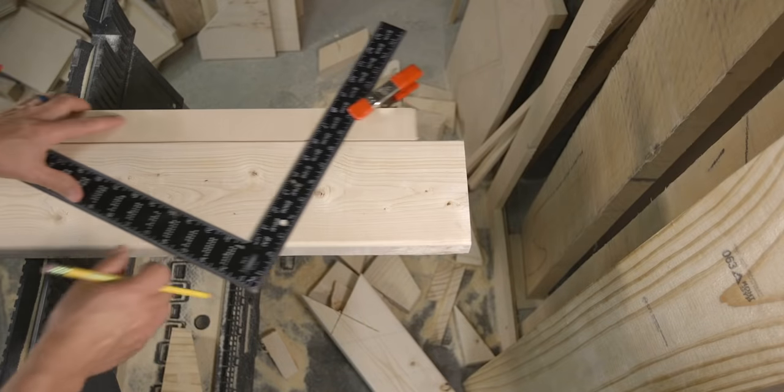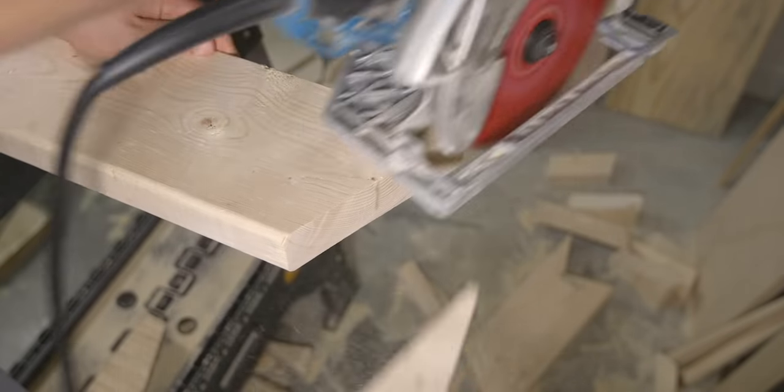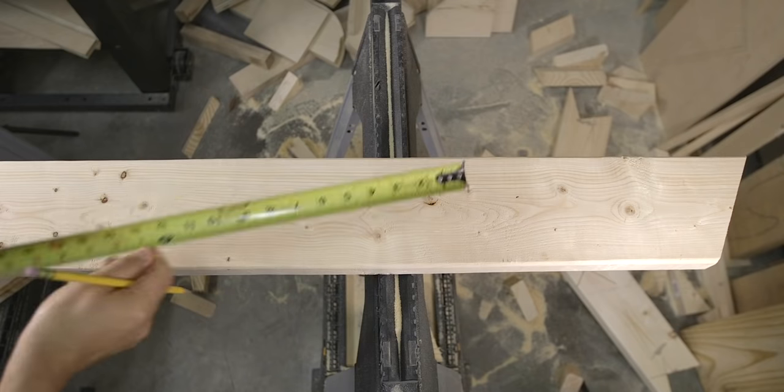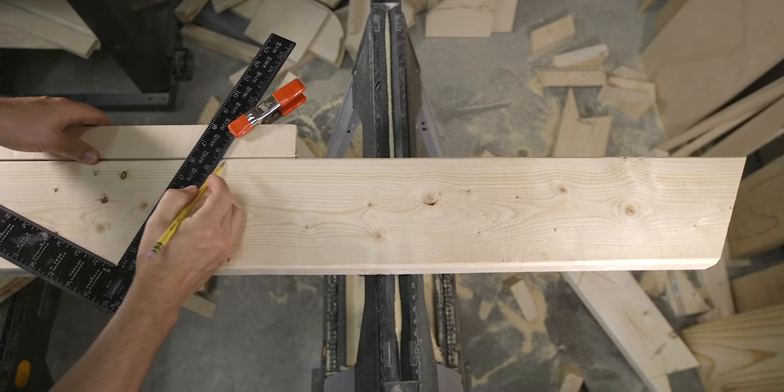Now slide the square up to the top of the rafter, trace the tongue angle and cut the angle with a saw. From there measure down from the top of the rafter 26 inches, make a mark and draw a second line.